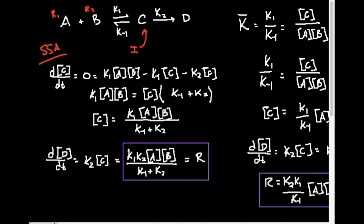Then C, the intermediate, will be converted into the product D, and that's governed by rate constant K2. In the steady-state approximation, it's really important to know exactly what your intermediate is. For a simple complex reaction mechanism, it's the species in the middle — in this case, C.